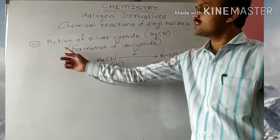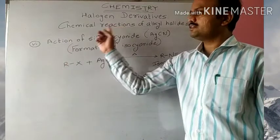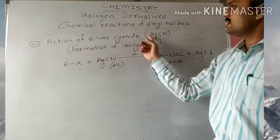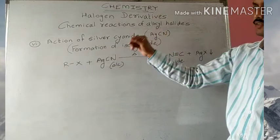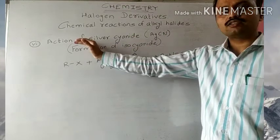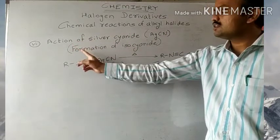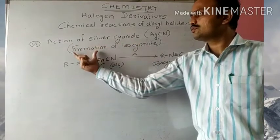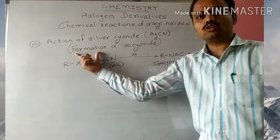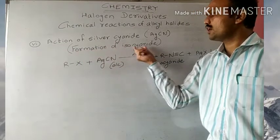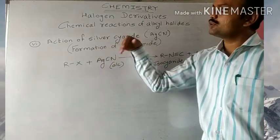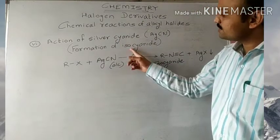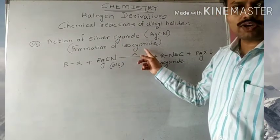In the next chemical property of alkyl halides, we have the action of silver cyanide — that is AgCN. In this reaction, the product we obtain is isocyanide. Therefore, this reaction is also called formation of isocyanide. In the previous reaction we saw formation of cyanide, and in this reaction we have formation of isocyanide.